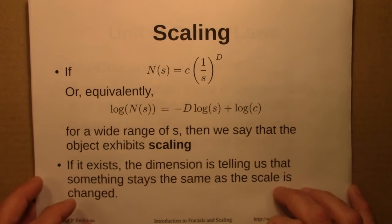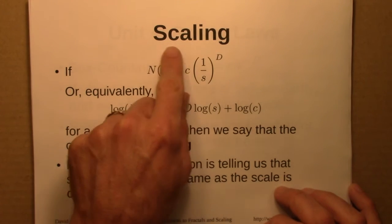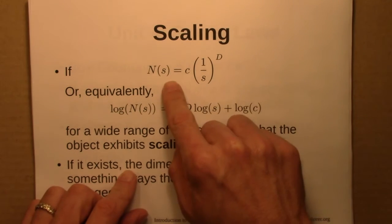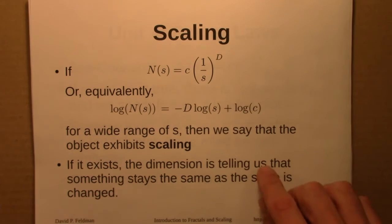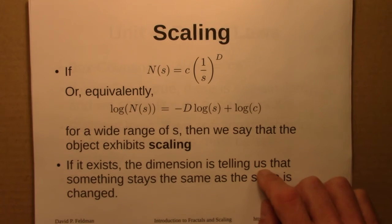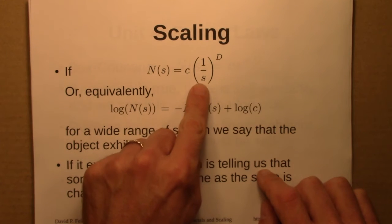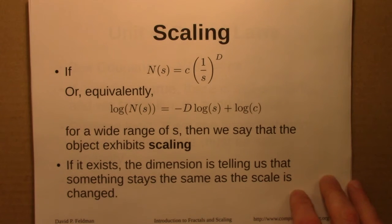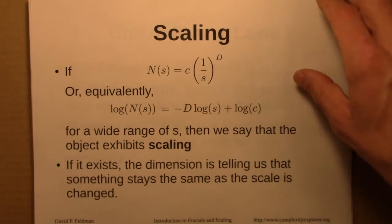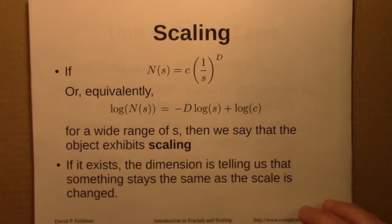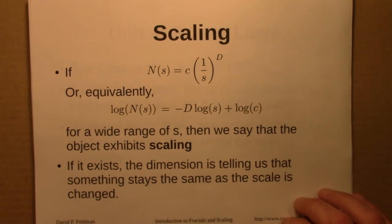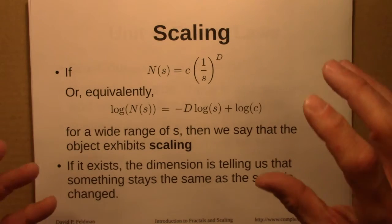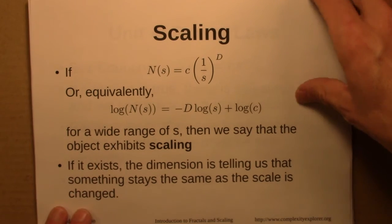We also introduced and defined more carefully the idea of scaling. If we have a relationship like N(S) = S^(-D), and that's true for a wide range of scales S — here S would be the box size, but it could be something more general — then we say that object or phenomenon exhibits scaling. The dimension, this exponent, is telling us that there's something staying the same as the scale changes: as we zoom in and out, some ratio of small to large remains constant.